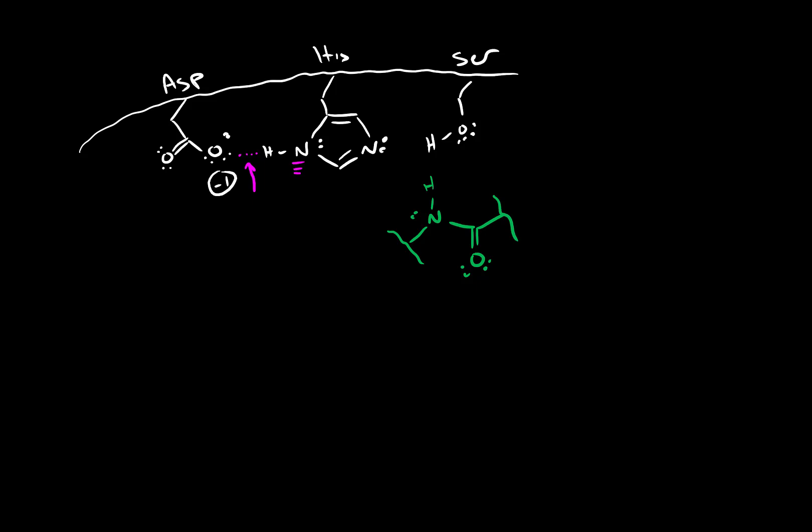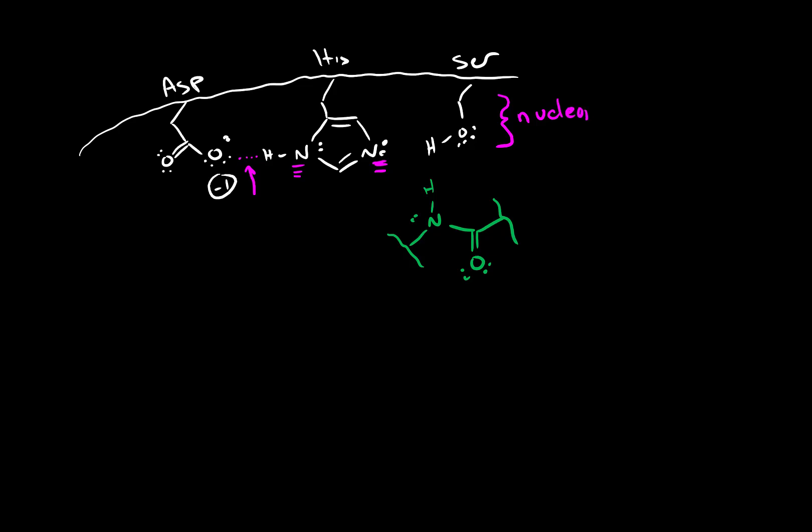Ultimately what it does is it makes this lone pair on nitrogen a lot more reactive than normally it would be. The reason that's really important is because the way this enzyme functions is by creating a nucleophile out of this serine that's present in the active site. So this serine becomes a nucleophile. In fact, it becomes the nucleophile that initiates or starts our mechanism. Let's go ahead and see how that works.